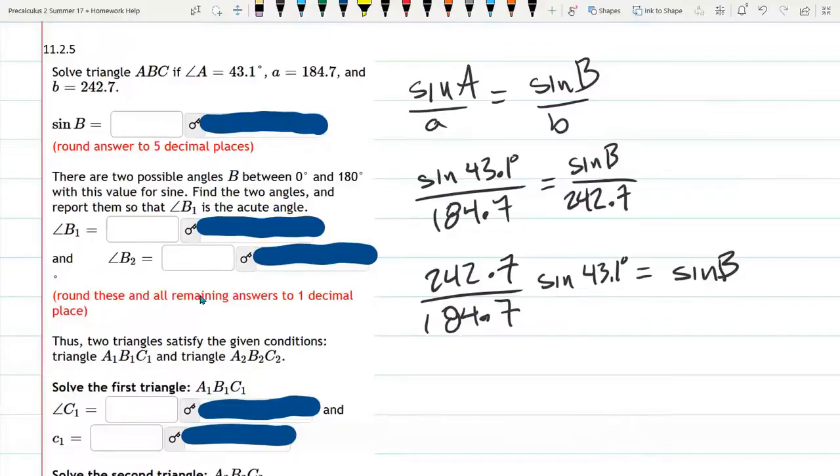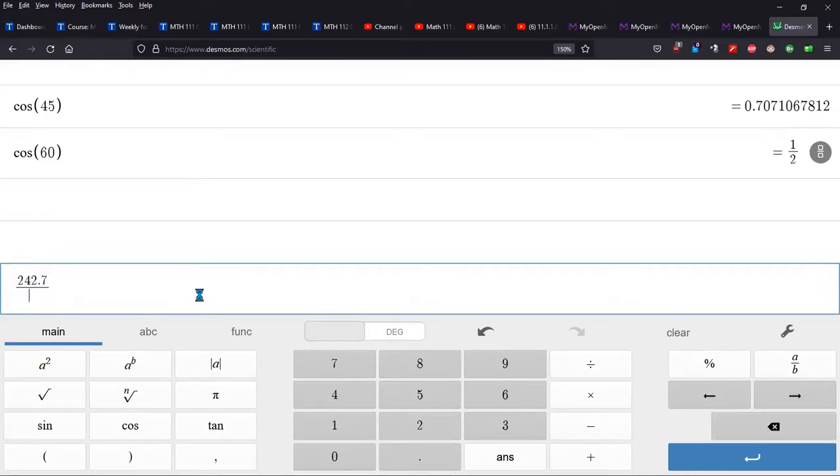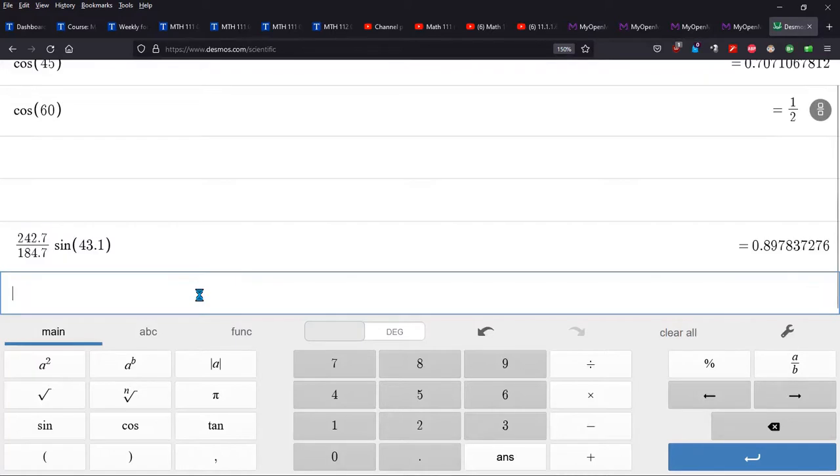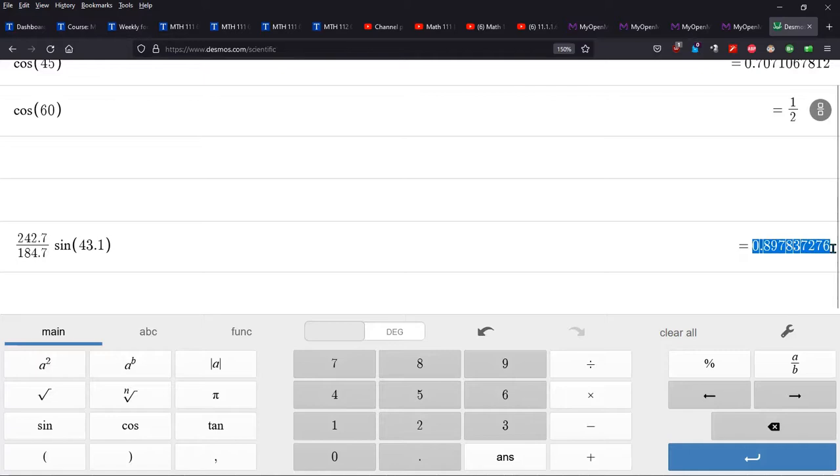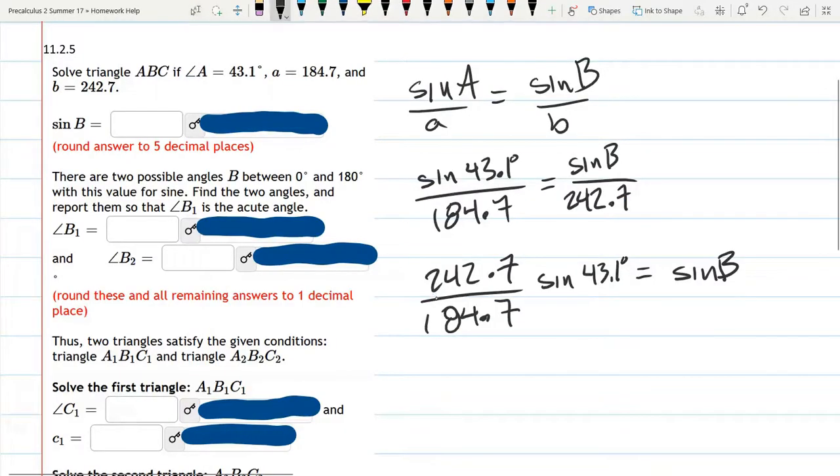So switch to degree mode, and you see the one half value you're expecting. All right, so we're just going to type in all that. 242.7 divided by 184.7 times sine of 43.1. I believe this question wanted a lot of accuracy with a decimal.